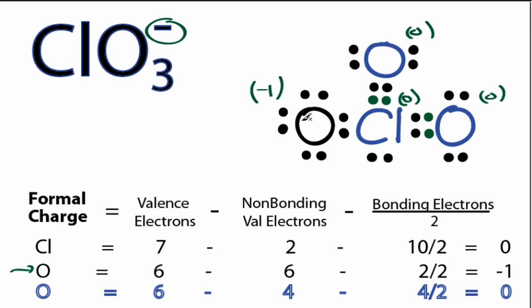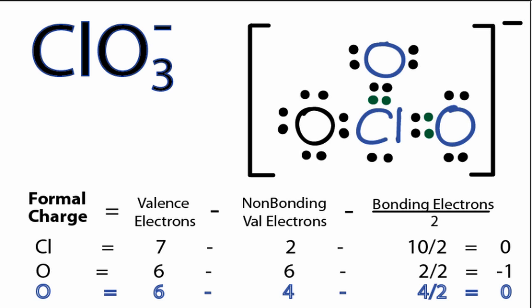One last thing: since it is an ion, we need to put brackets around it to show that it has a negative charge. And that represents the best Lewis structure for ClO3 minus.